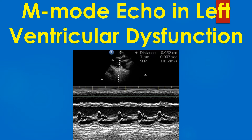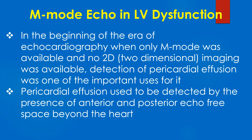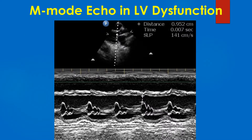In the beginning of the era of echocardiography, when only M mode was available and no 2-dimensional imaging was available, detection of pericardial effusion was one of the important uses of it. Pericardial effusion used to be detected by the presence of anterior and posterior echo-free space beyond the heart. This M mode cut is taken from the parasternal view, guiding the position of the cursor using the parasternal long axis 2D view which is seen in the top panel.